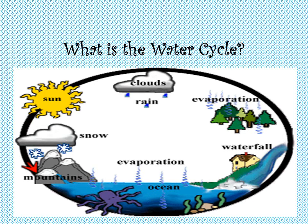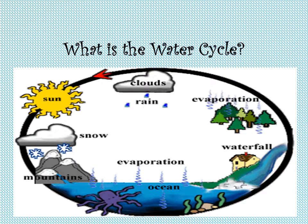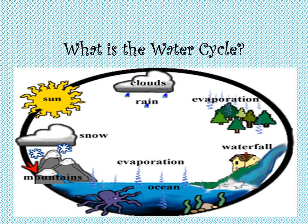Water vapour cools down, then it changes to liquid. Precipitation happens when the drops get big.